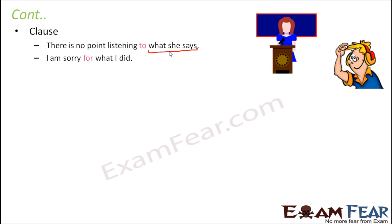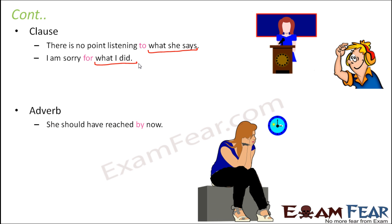So to summarize with one or two examples each, the object of a preposition could be a noun, it could be a pronoun, it could be a clause, and it could also be an adverb. For example: 'She should have reached by now.' Here 'by' is the preposition and 'now' is an adverb acting as the object.